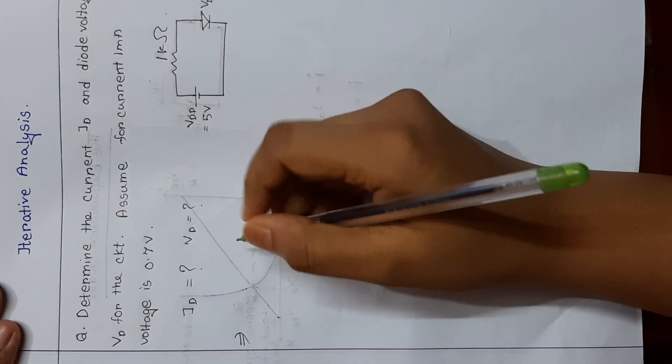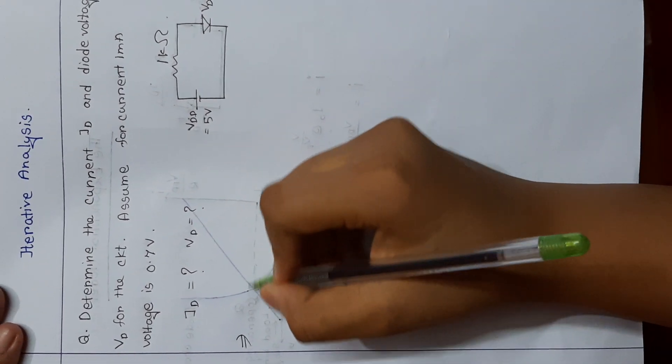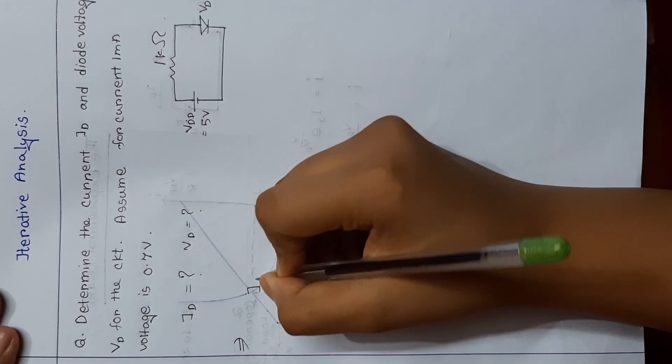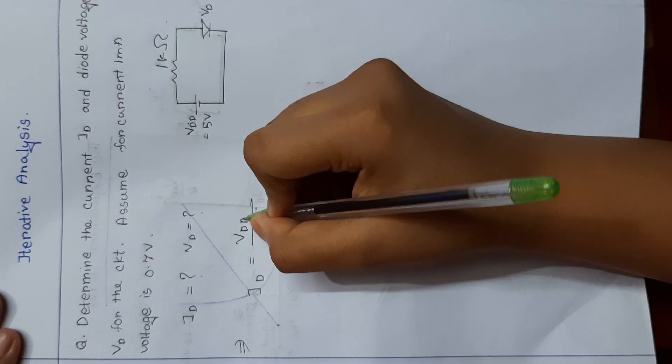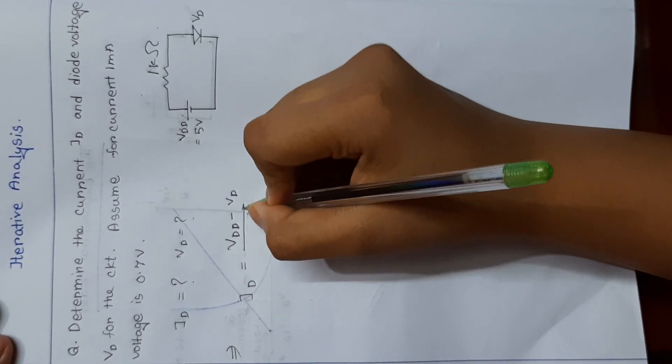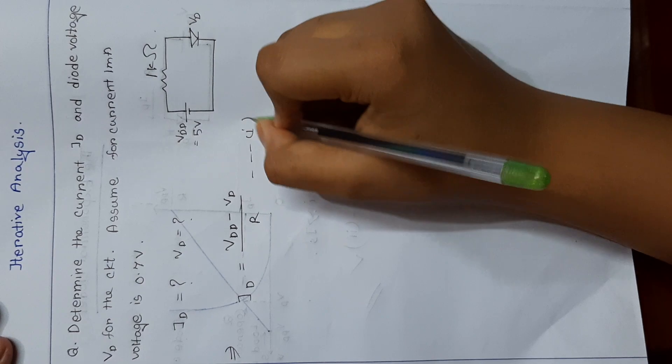At first, we have to take, from the KVL equation, we can find Id is equal to Vdd minus Vd by R. This is the KVL equation for diode.